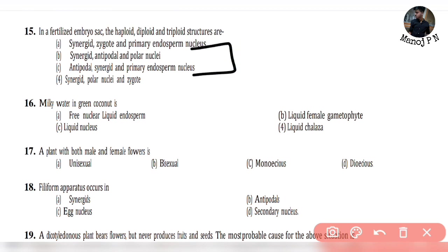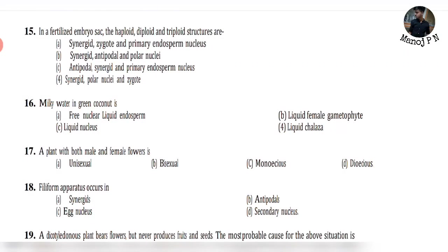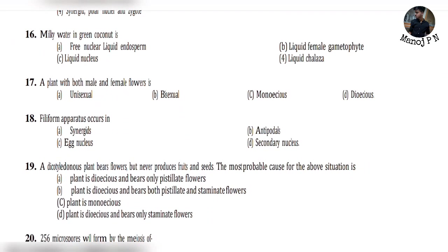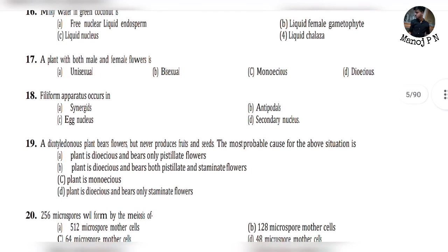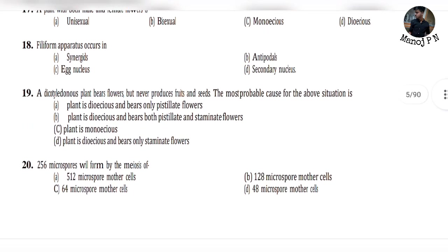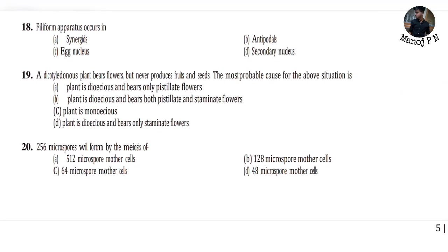Question 15: Milky water in green coconut is free nuclear liquid endosperm. Question 16: A plant with both male and female flowers is called monoecious. Question 17: Polyembryony occurs in synergids — it is very simple.